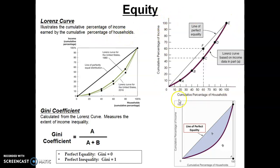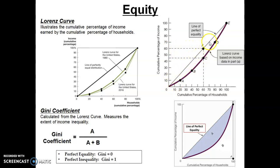Let's start with a hypothetical one. On the horizontal axis, we put the cumulative percentage of households from 0 to 100%. On the vertical axis, we put the cumulative percentage of income, again from 0 to 100%. We then bifurcate the axis with a 45-degree line called the line of perfect equality. The implication is that the cumulative percentage of households equals the cumulative percentage of income — for example, 20% of households would have 20% of income, 40% would have 40%, 60% would have 60%.